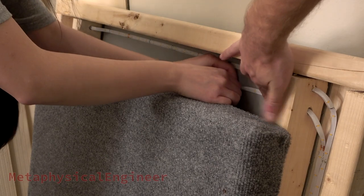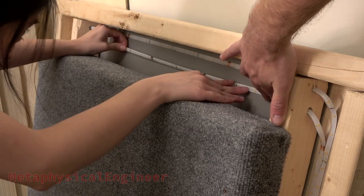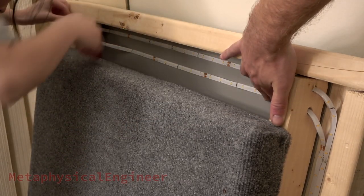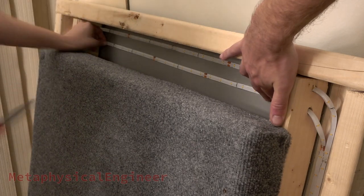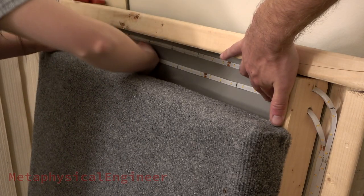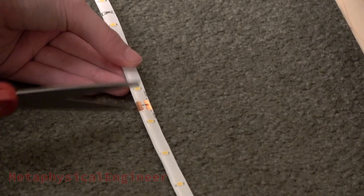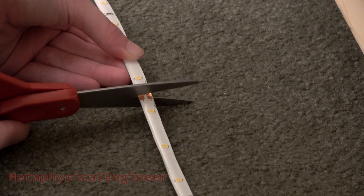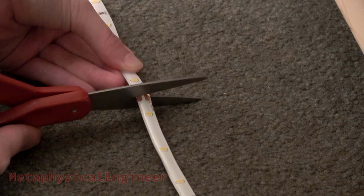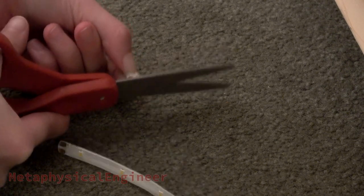The strips had adhesive backing, though peeling the backing plastic off in the confines we had to work with proved a bit challenging. Extra length got chopped off at a designated point. In the case of this 24 volt strip, it could be trimmed every six LEDs.